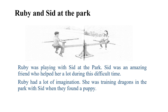Ruby and Sid at the park: Ruby was playing with Sid at the park. Sid was an amazing friend who helped her a lot during this difficult time. Ruby had lots of imagination. She was trading jagged in the park with Sid when they found a puppy.